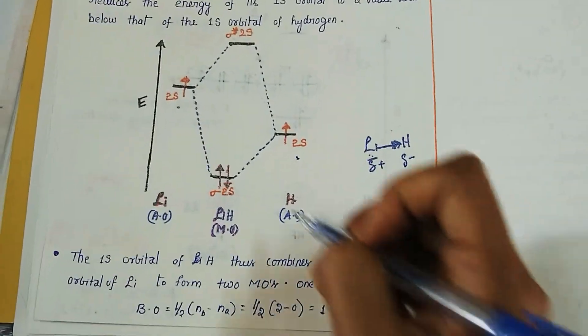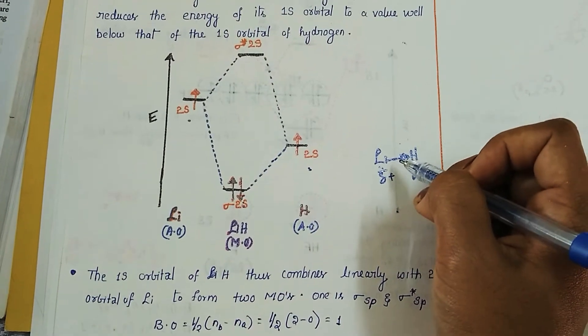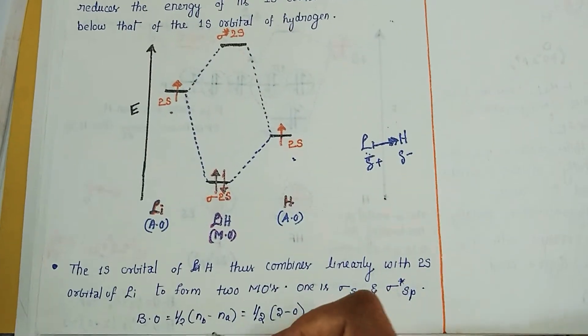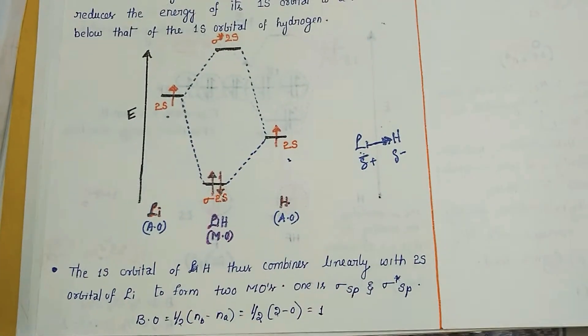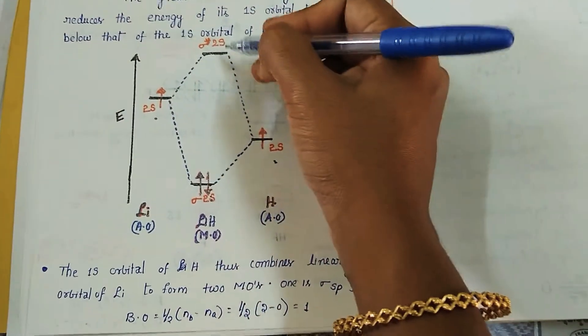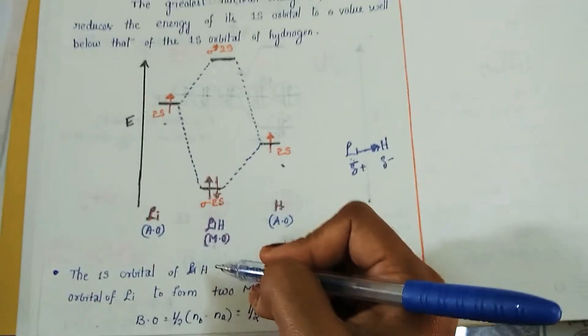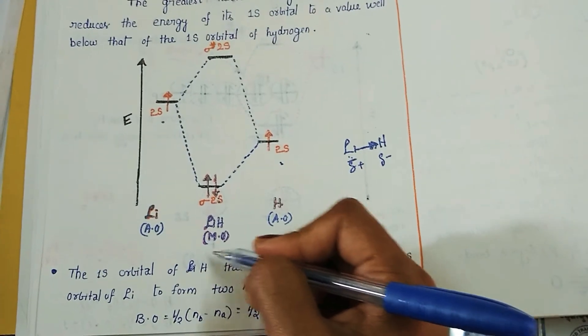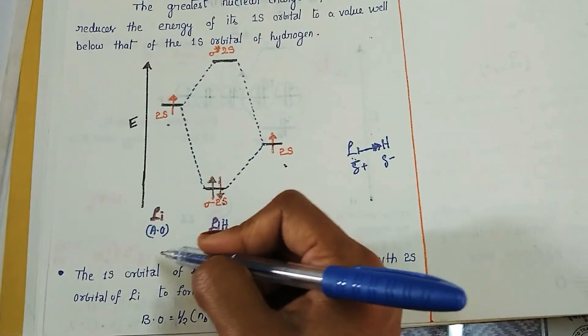So here only a single sigma bond is going to form. So the bond order: number of bonded electrons minus antibonded. Here bonded electrons are two and it doesn't have any antibonding. It is having one non-bonding in the 1s². That is from lithium.